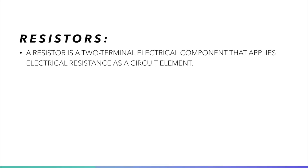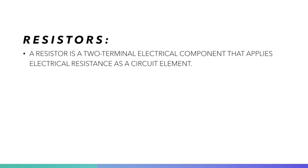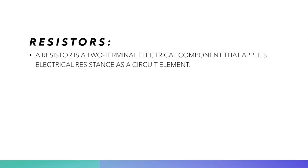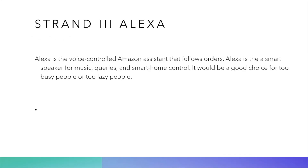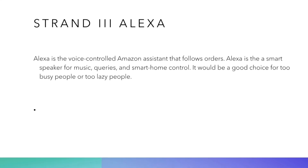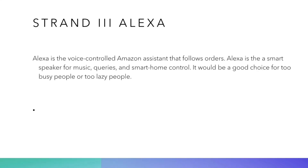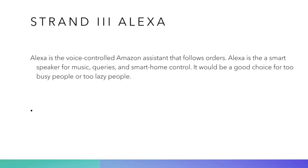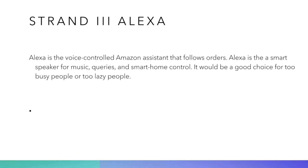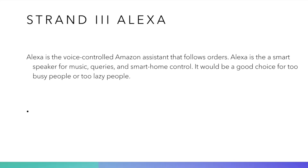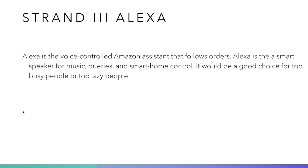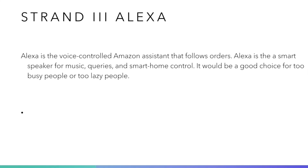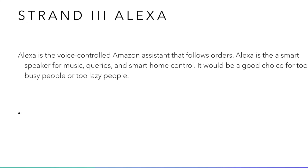In Criteria A, strand 3, we had to choose a home automation device. We chose Alexa. Alexa is the voice-controlled Amazon assistant that follows audio commands. Alexa is a smart speaker for music, queries, and smart home control. It would be a good choice for busy people or people who prefer hands-free control.